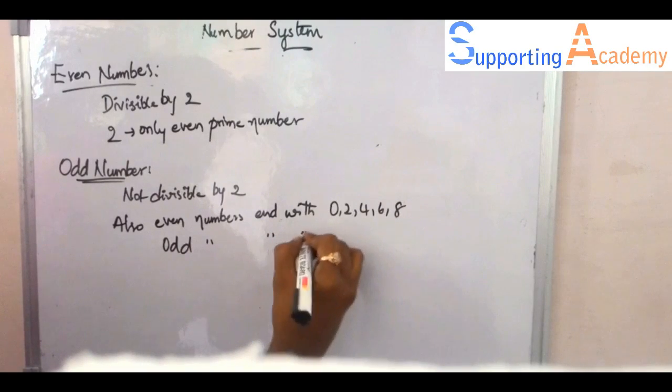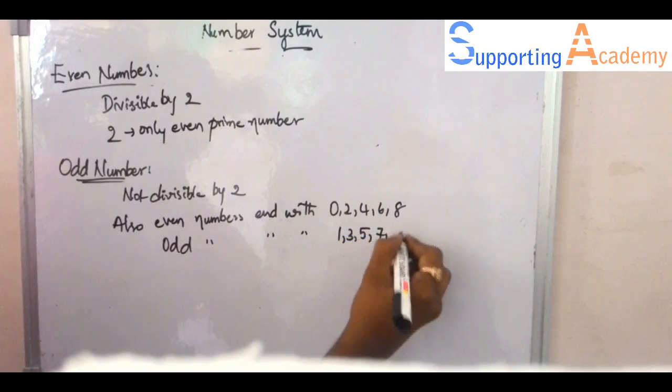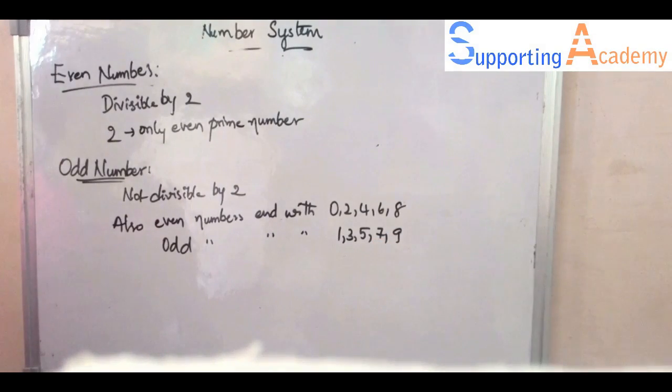They end with 0, 2, 4, 6, 8. And the odd numbers end with 1, 3, 5, 7, 9. Okay guys. Thank you.